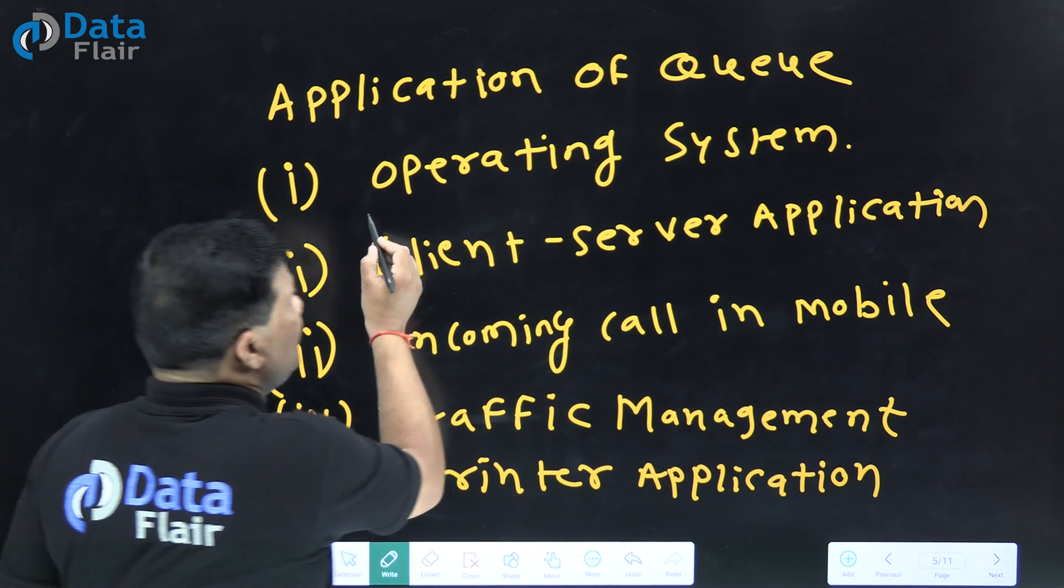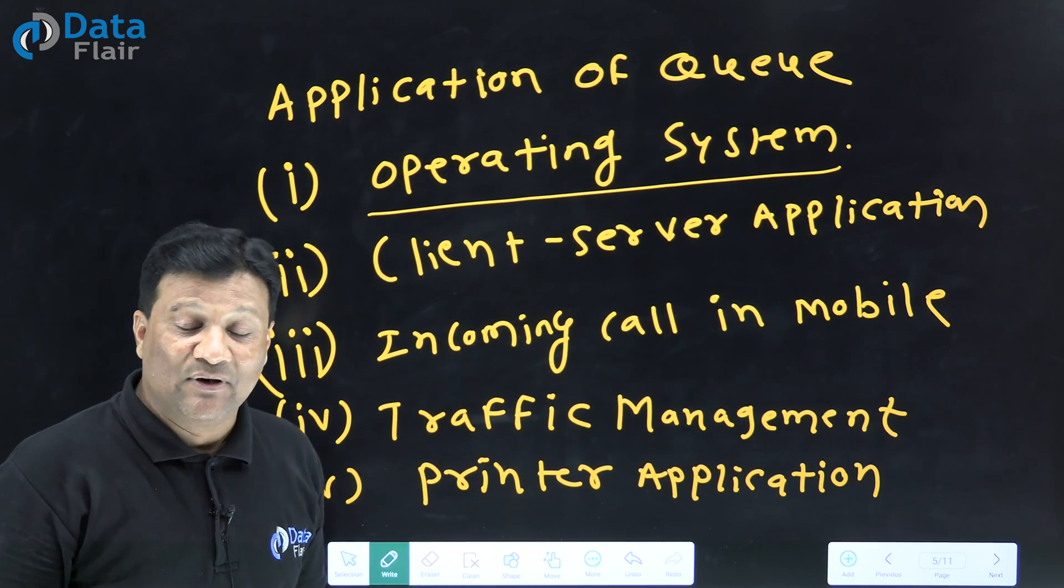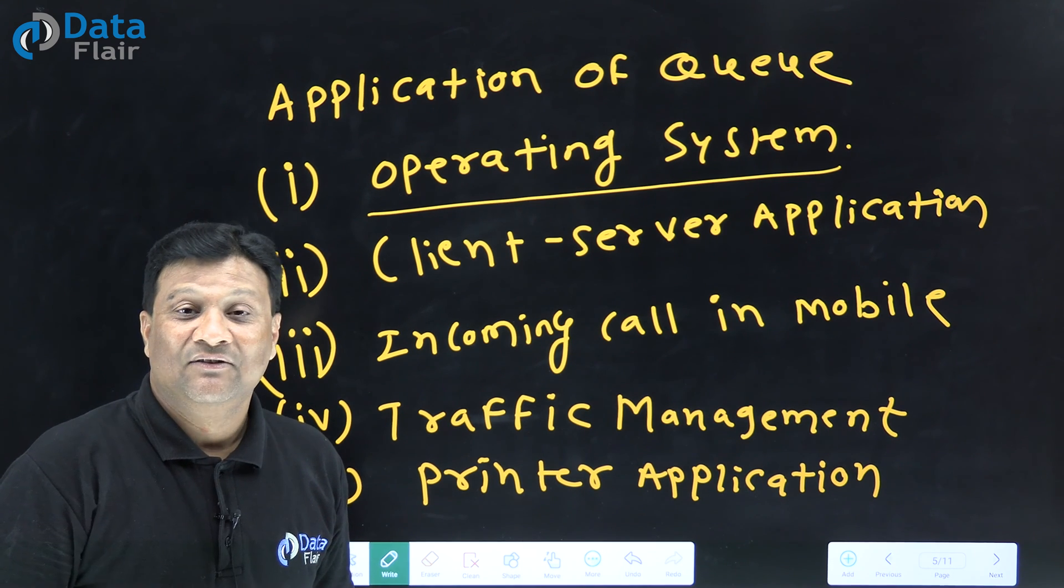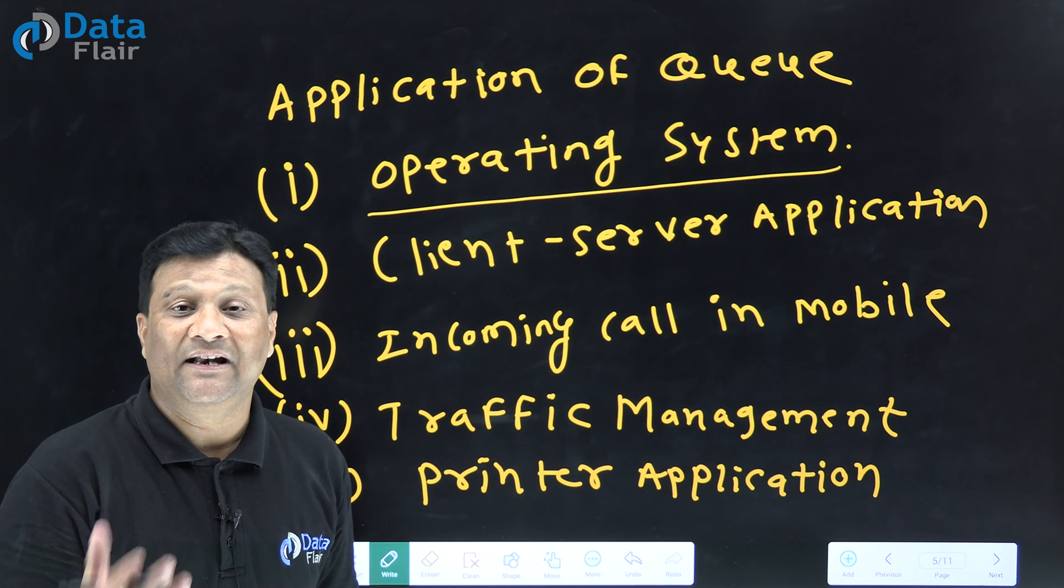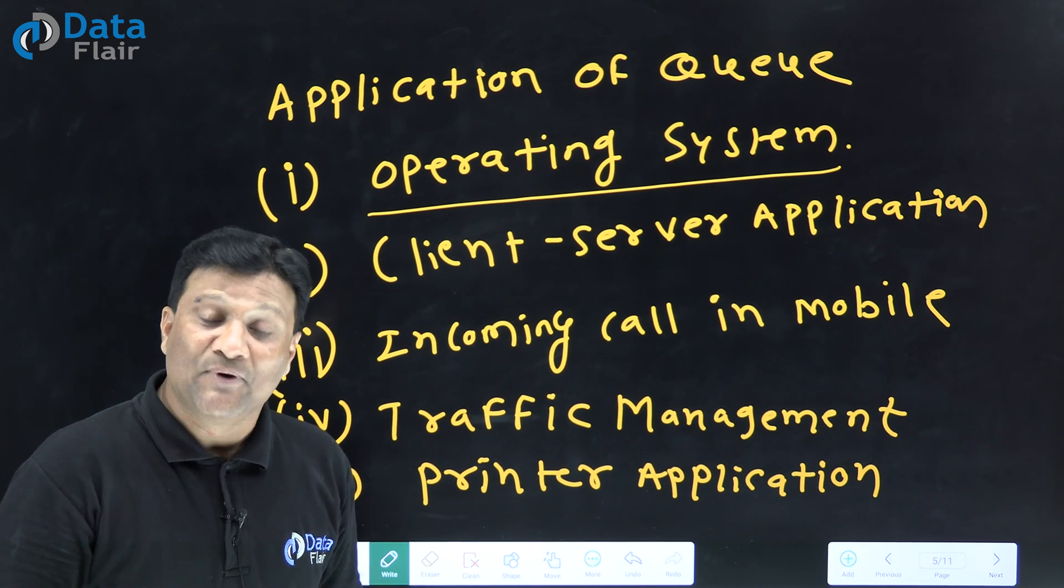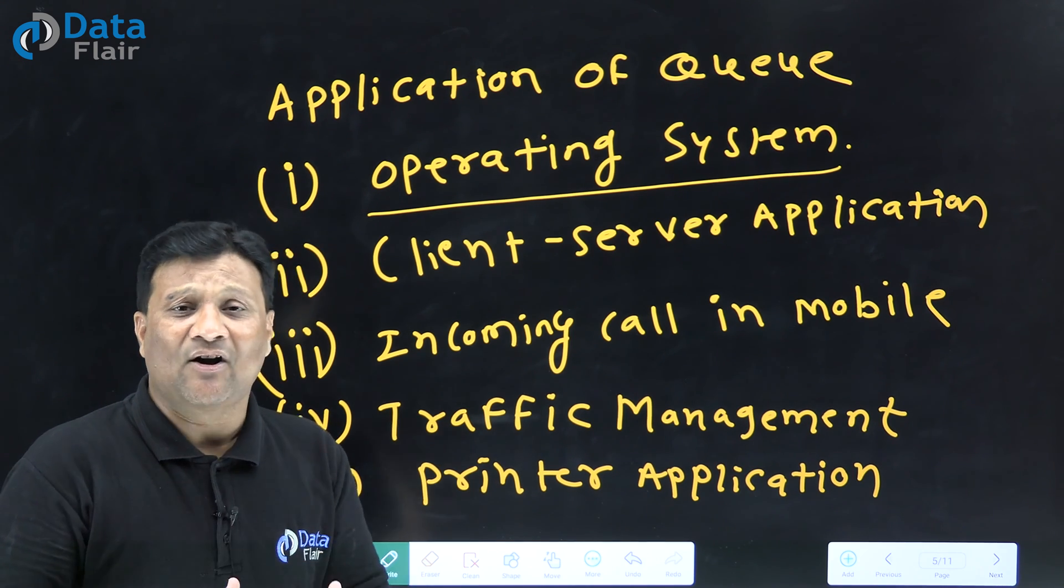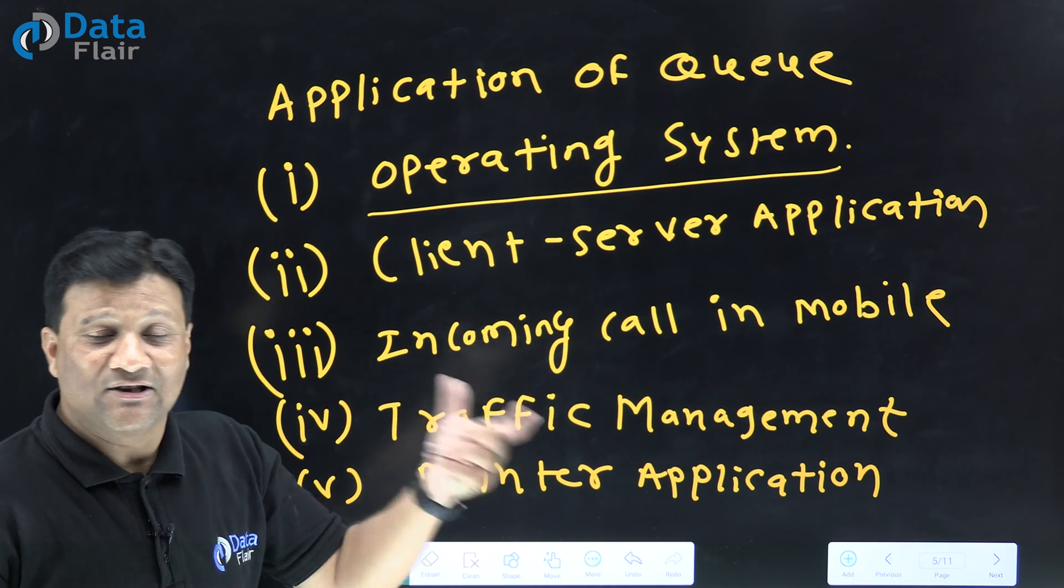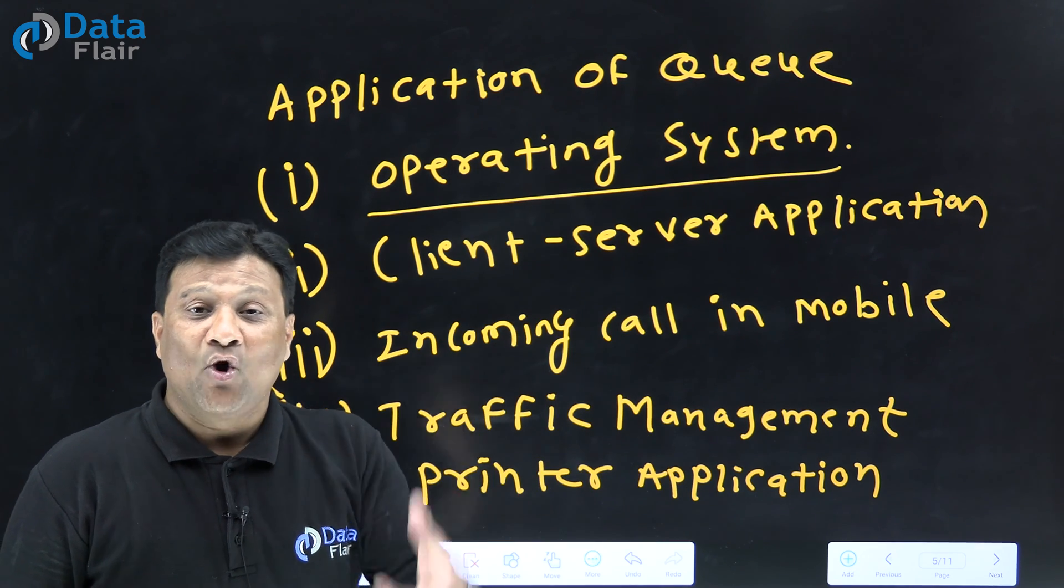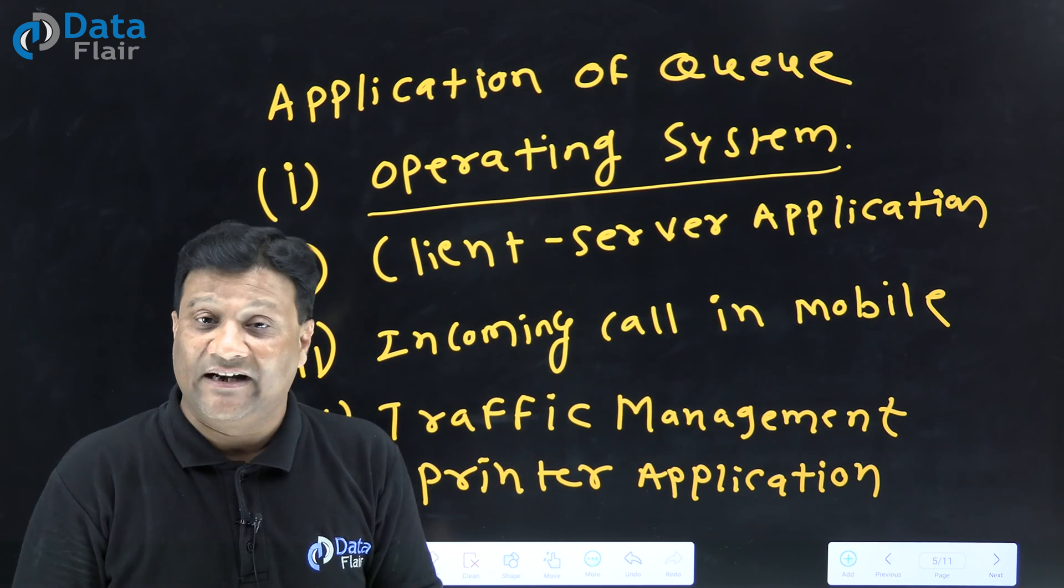There are lots of places where you mainly find Queue implementation. In operating system, CPU scheduling - they implement Queue concept first-in-first-out. In CPU scheduling in operating system, they mainly implement Queue concept. In client-server applications, internet-based applications based on client-server architecture where you have a server maintaining some application.